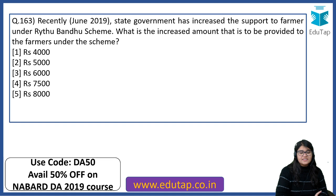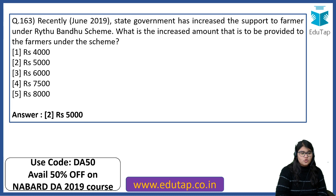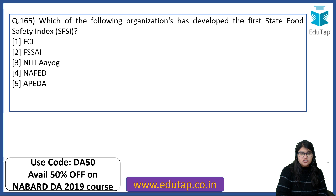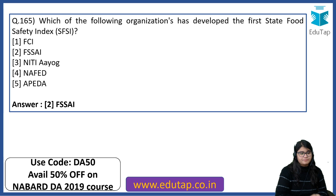The state government recently increased support to farmers under the Raitu Bandhu scheme — the increased amount is Rs. 5000. World Food Safety Day is celebrated on 7th June. Which organization developed the first state food safety index? The 165th question — it is regarding the first state food safety index. The answer is FSSAI.